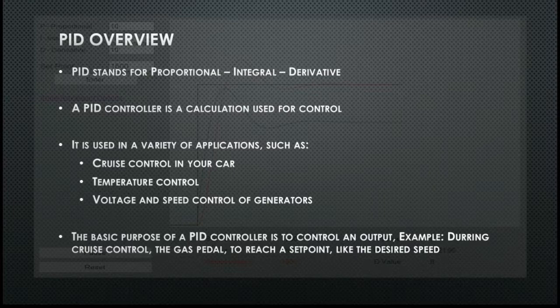Let's give an example. You're driving down the road and you set your cruise control at 100 kilometers an hour — your set point now becomes 100 kilometers an hour. As you approach a hill, your vehicle slows down to 70 kilometers an hour, so your process value is 70 kilometers an hour. 100 minus 70 is 30. The PID controller looks at the error — the 30 kilometers an hour — and tries to bring it to zero by pushing on the gas pedal, or increasing the output, until the process value reaches the desired set point.